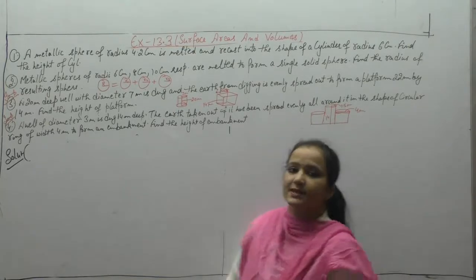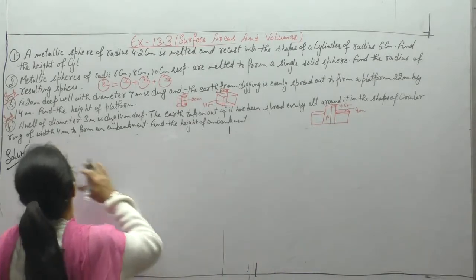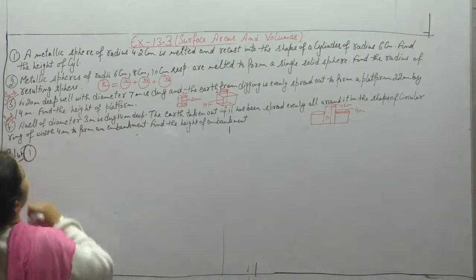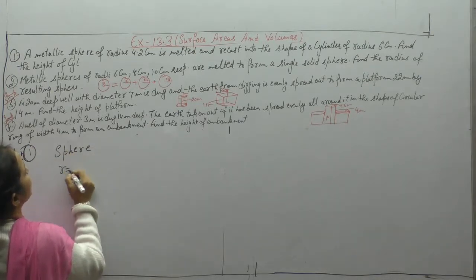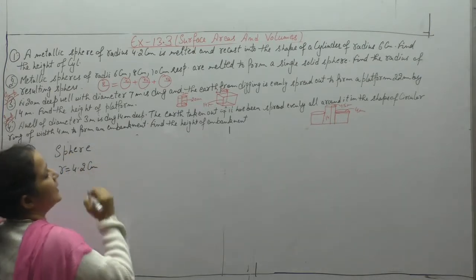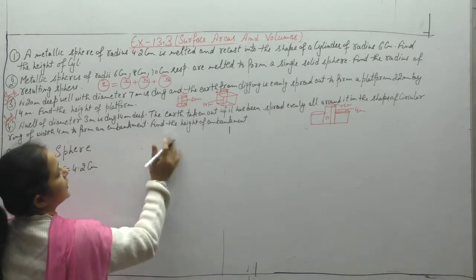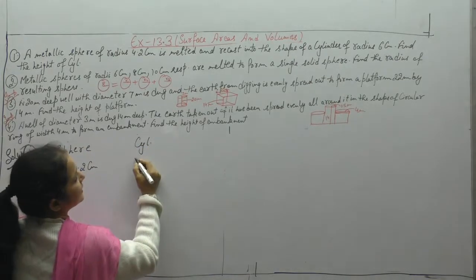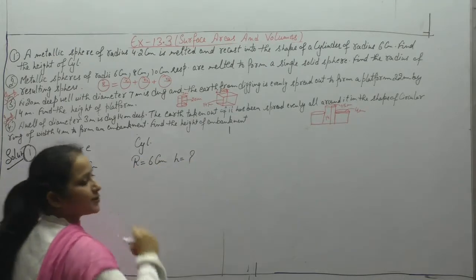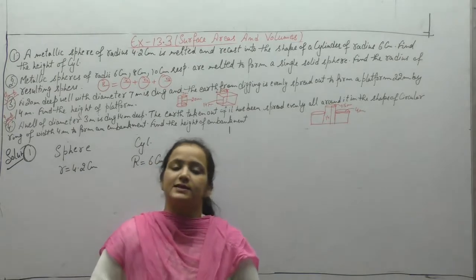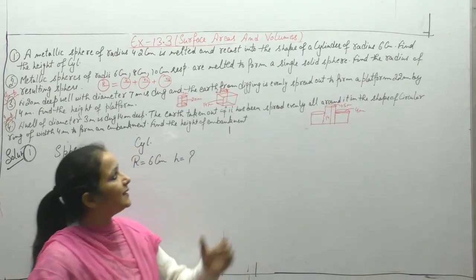Hello students, next exercise starting — Exercise 13.3. First question: a metallic sphere of radius 4.2 centimeter is melted and recast into the shape of a cylinder whose radius is 6 centimeter. Find the height of the cylinder. If something is melted and made again, the volume will remain the same.